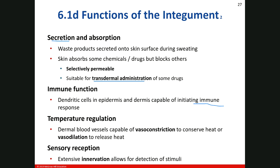For temperature regulation — remember back in Chapter 1 — you would sweat to release heat, and you would have vasodilation of the blood vessels in your skin, increasing blood flow to give off heat. When you were in a cold environment, you'd get vasoconstriction, decreasing blood flow to your skin and keeping your blood closer to the internal organs, and then you would start to shiver.